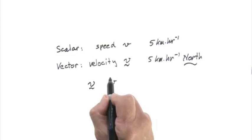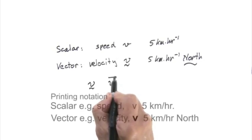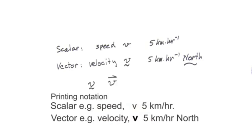Some people put an arrow above the vector in handwriting, and in printing, vectors are often given bold font.